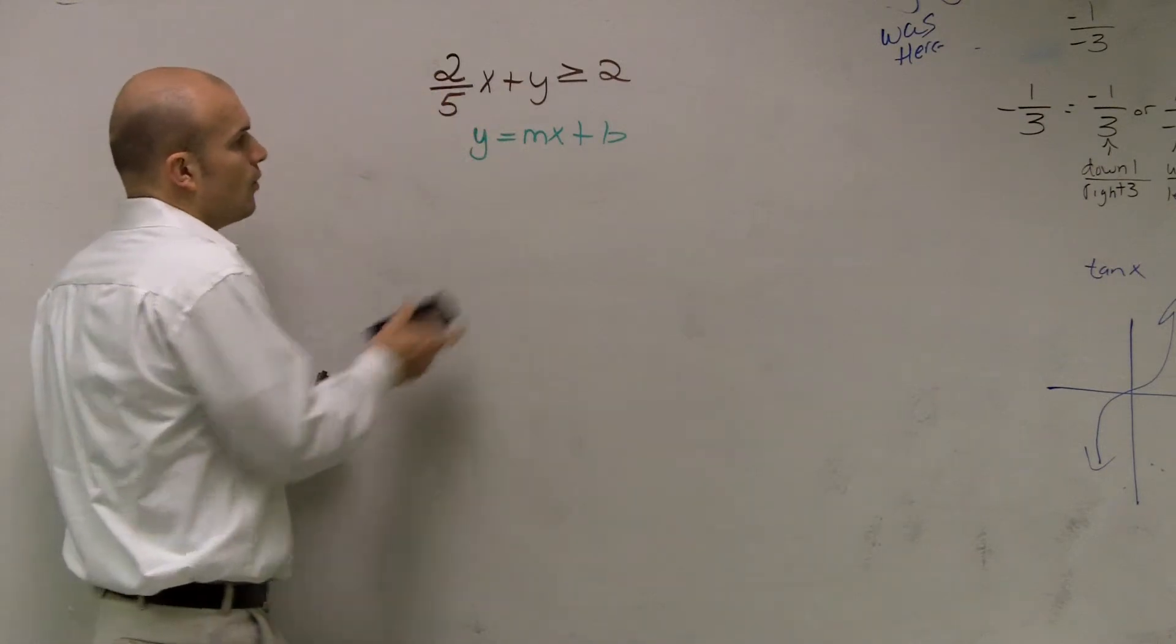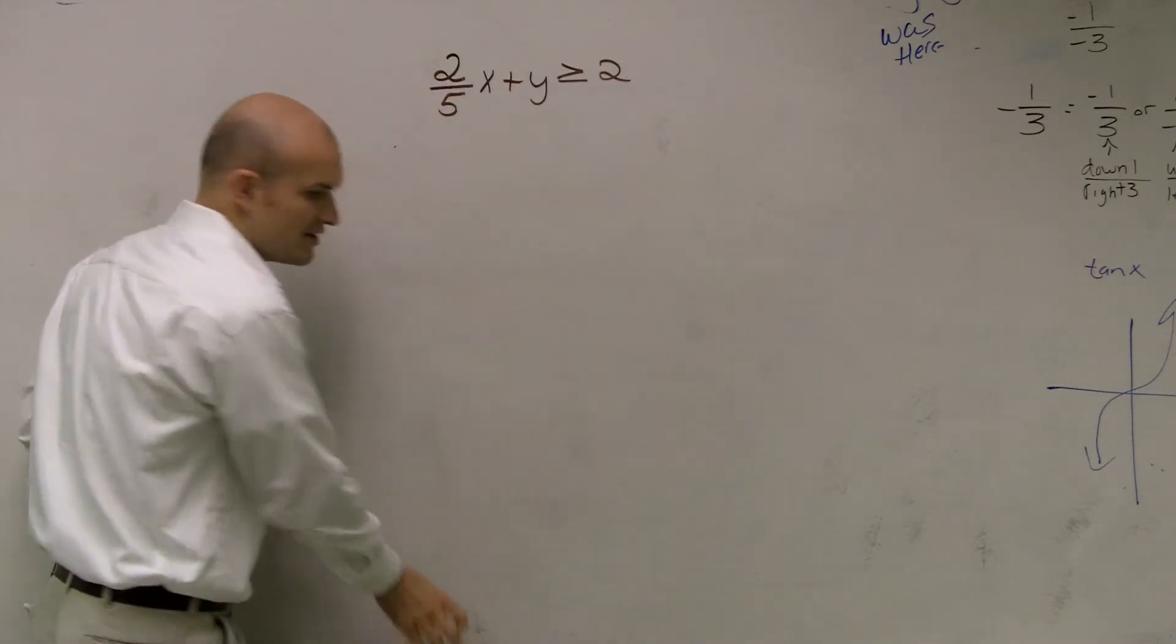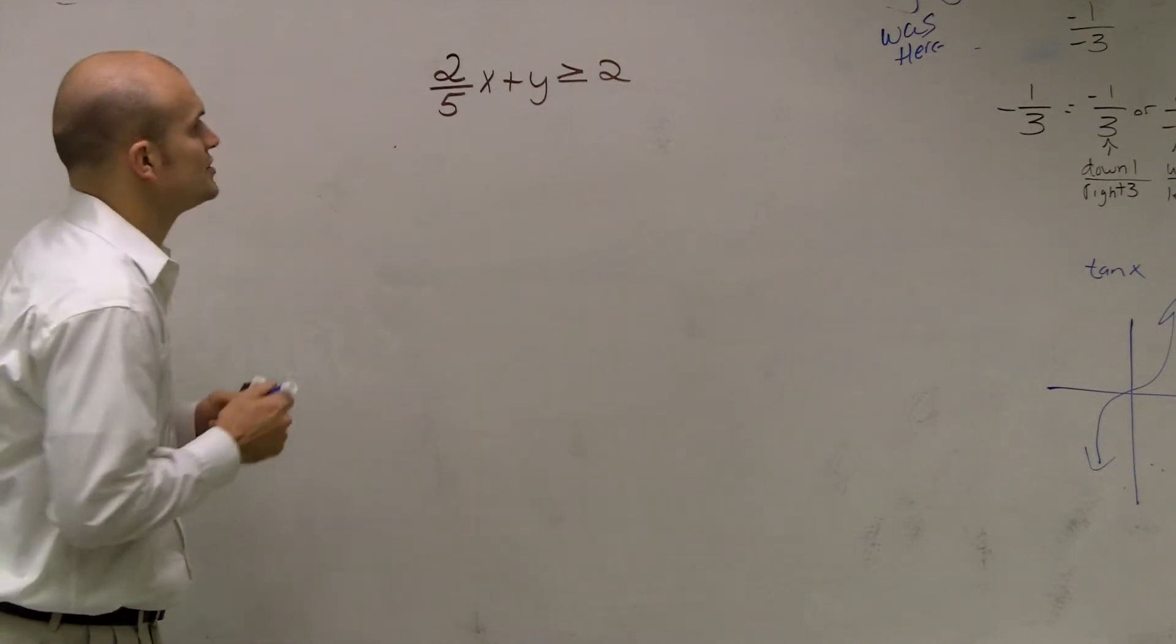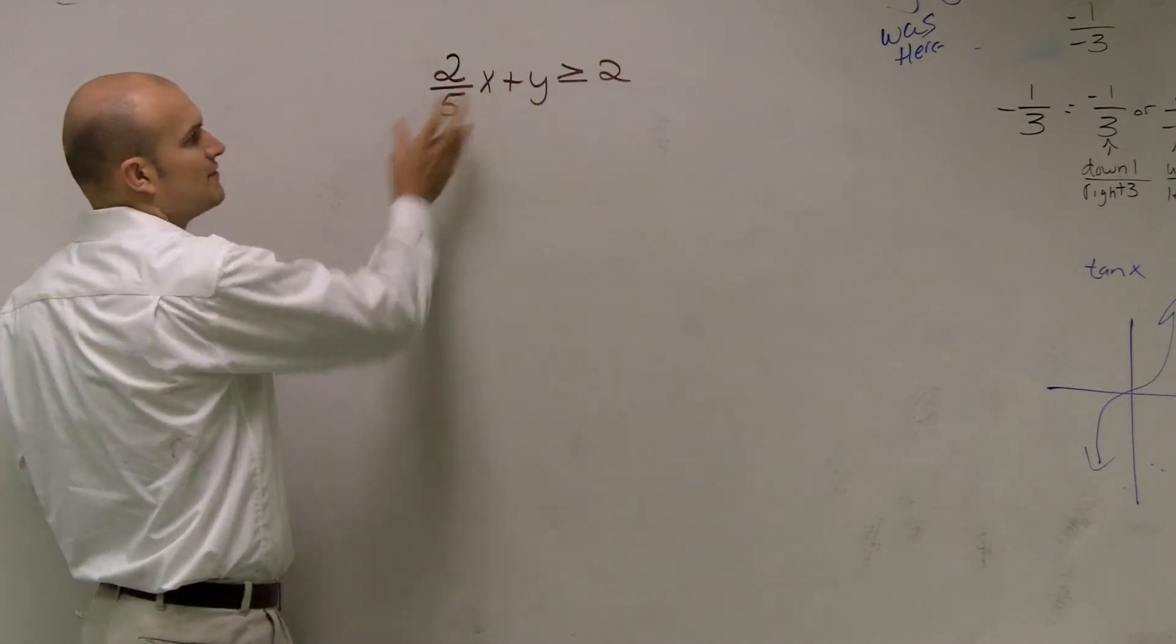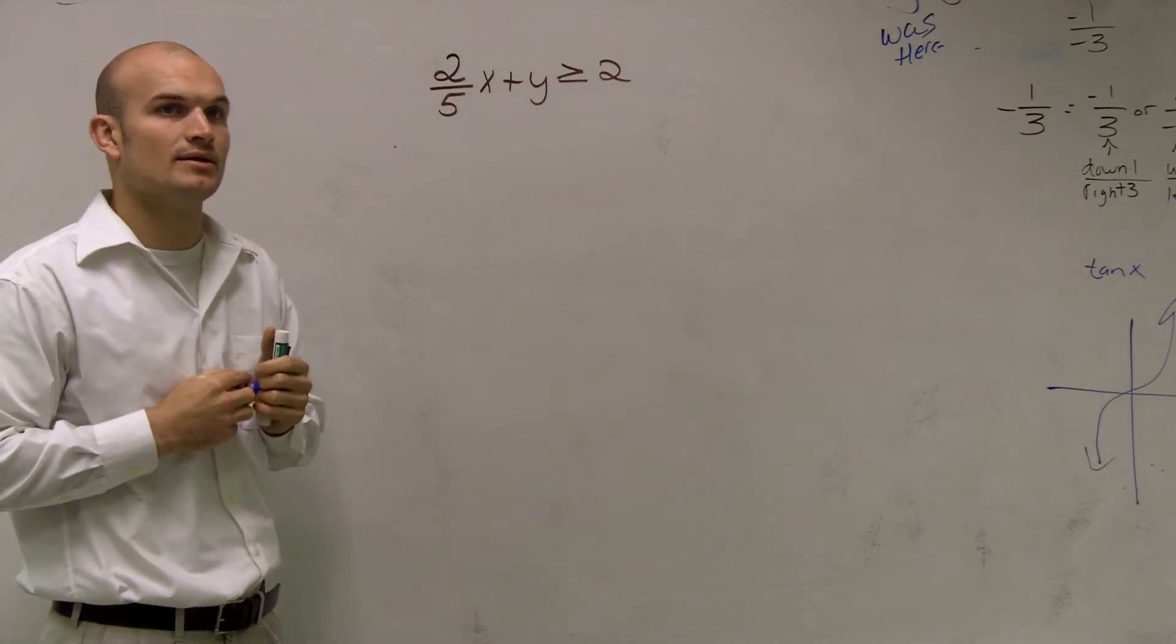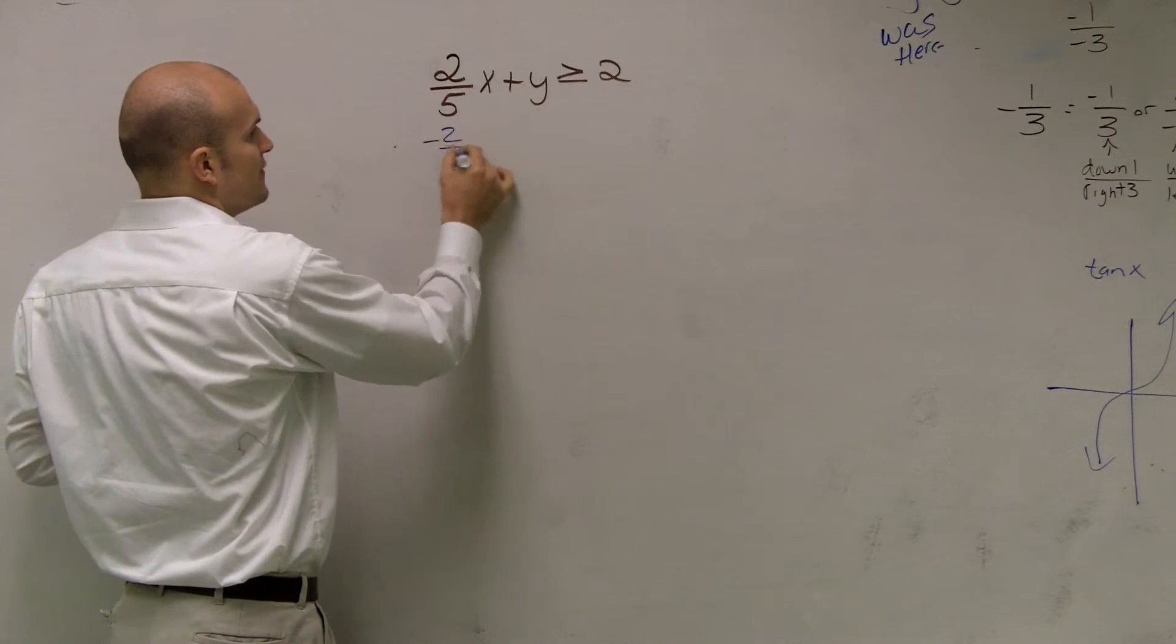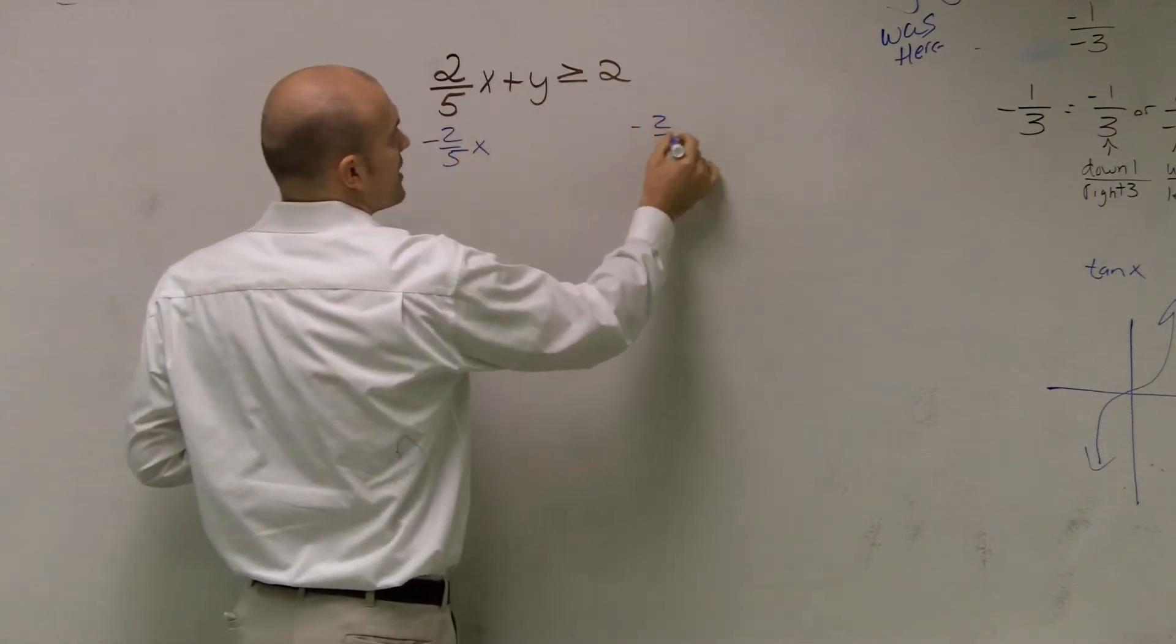So there's two things you can do. One thing is you can simply solve your inequality for your variable y. So to do that, what you need to do is, if I have my y and I have the 2 fifths x added to it, what I need to do is get rid of that 2 fifths x.